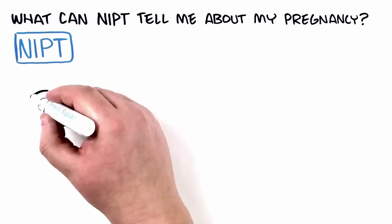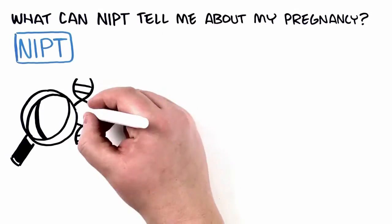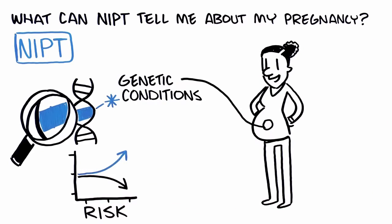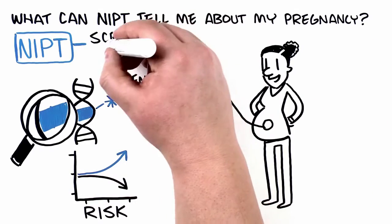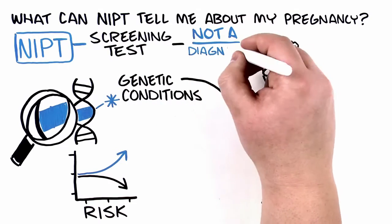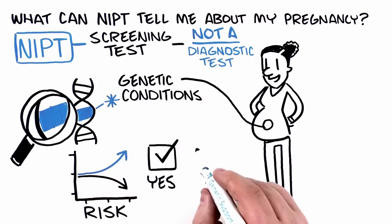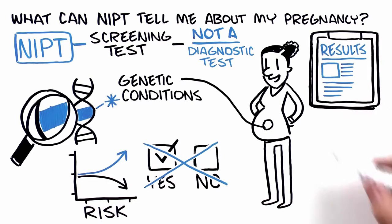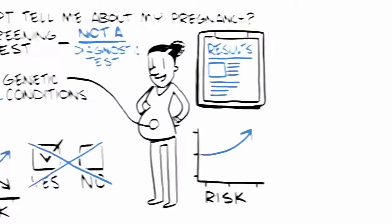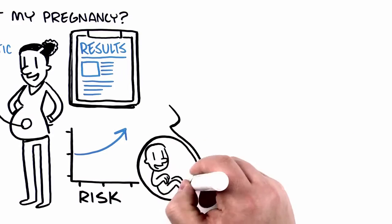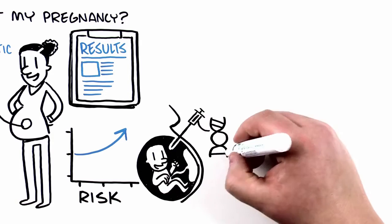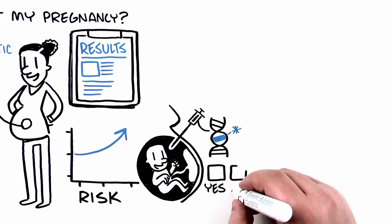NIPT is a screening test that can determine if the chance of certain genetic conditions in a pregnancy is higher or lower. Since NIPT is a screening test and not a diagnostic test, it cannot give you yes or no answers. If results indicate a high or increased risk, then a diagnostic test, such as amniocentesis, can be performed if the patient desires to determine whether the baby really has the condition or not.